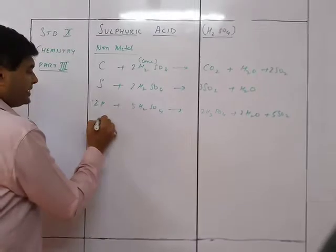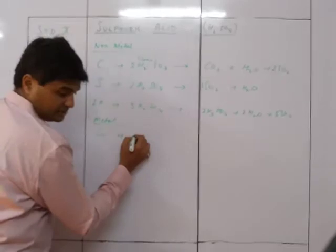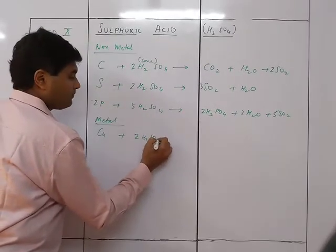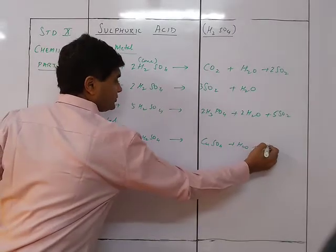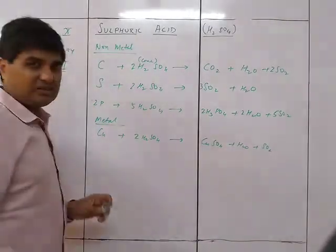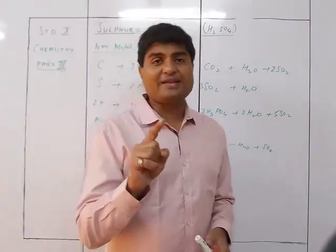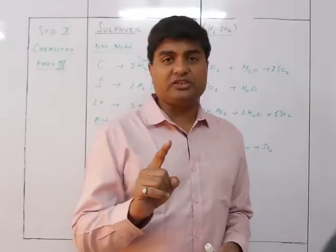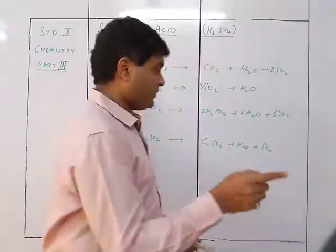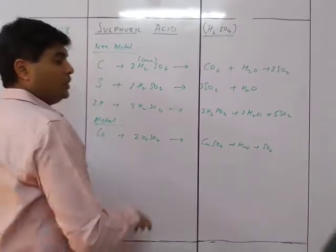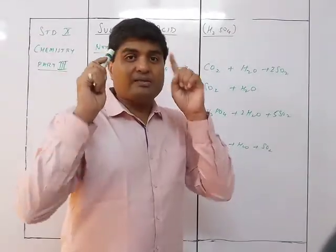With metals: Cu + 2H₂SO₄ (concentrated) → CuSO₄ + 2H₂O + SO₂. These reactions are very similar to those with nitric acid, since nitric acid is also a good oxidizing agent that produces nascent oxygen. With concentrated HNO₃ you get NO₂; with concentrated H₂SO₄ you get SO₂.